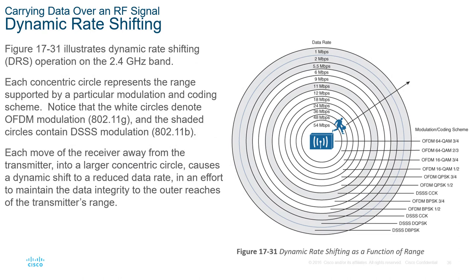Dynamic Rate Shifting (DRS) operates at the 2.4 GHz range. As a client device moves away from the transmitter, depending on the modulation and coding scheme (MCS), speeds decrease the further away it goes. Each successive distance from the transmitter causes a dynamic shift that reduces the data rate in an effort to maintain data integrity. At the outer reaches, a different modulation and coding scheme is chosen to sustain the connection.